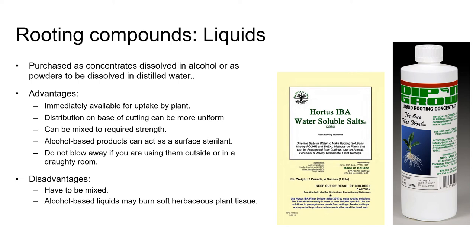Always prepare your liquid rooting compound before you prepare your cuttings so that you can dip them and plant them as quickly as possible once you've prepared them. Usually you dip the bottom half inch, or more on longer cuttings, into the liquid for between one and five seconds. You then stick the cutting immediately, and there's usually no need to dibble a hole. You can usually dip several cuttings at once if the hormone is in a fairly wide container, and this can speed up the sticking process and reduce the number of repetitive movements that workers have to make.